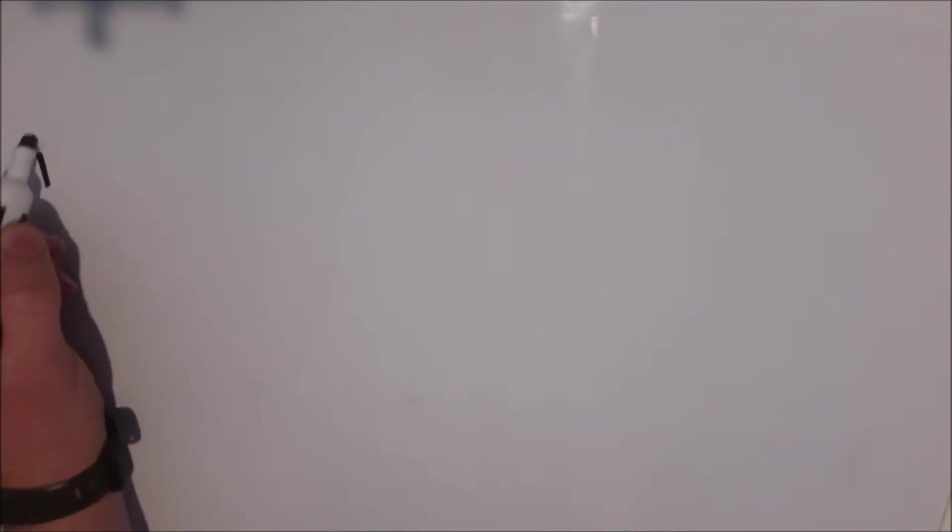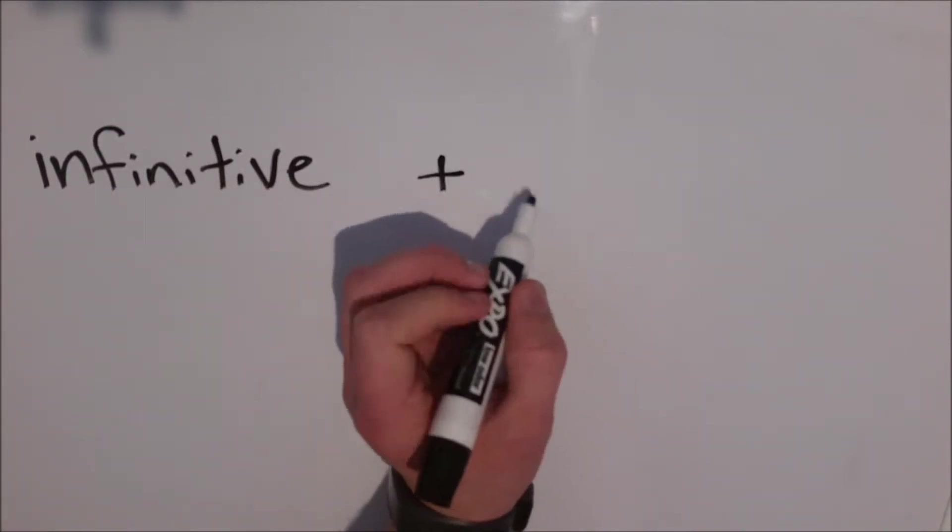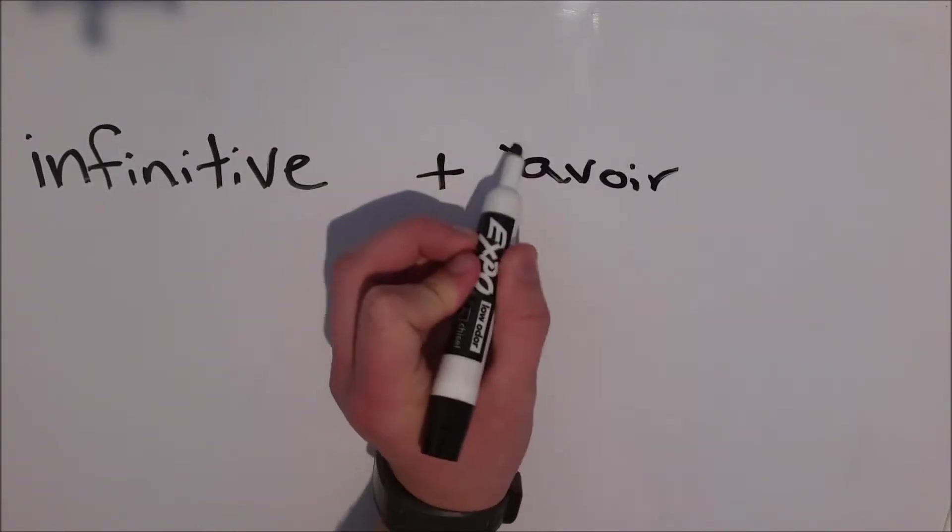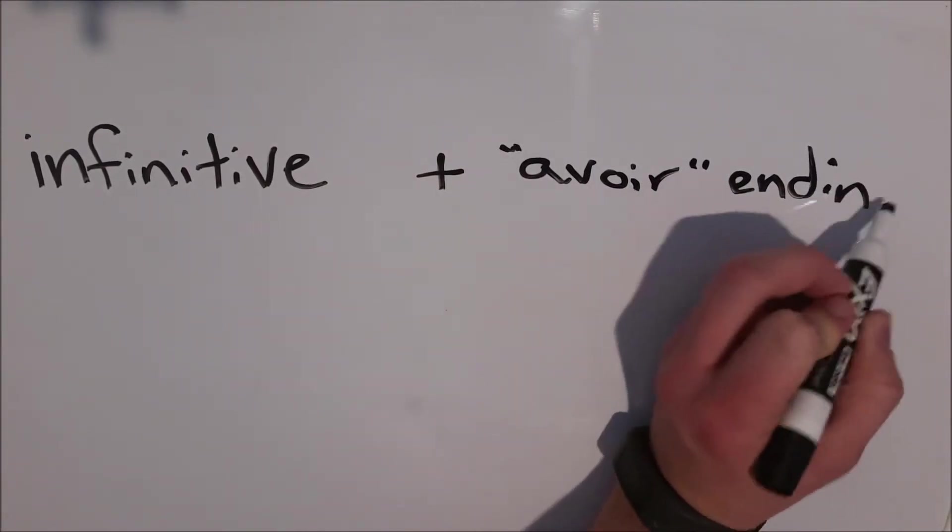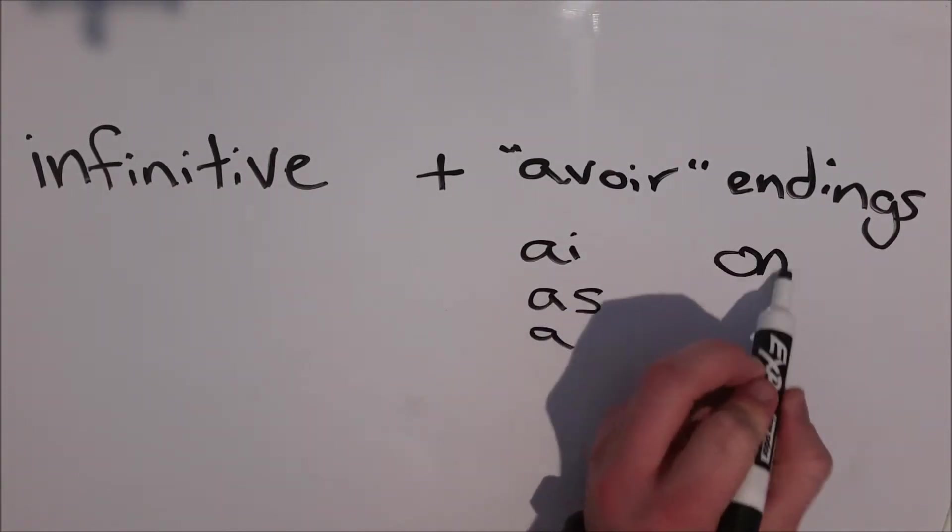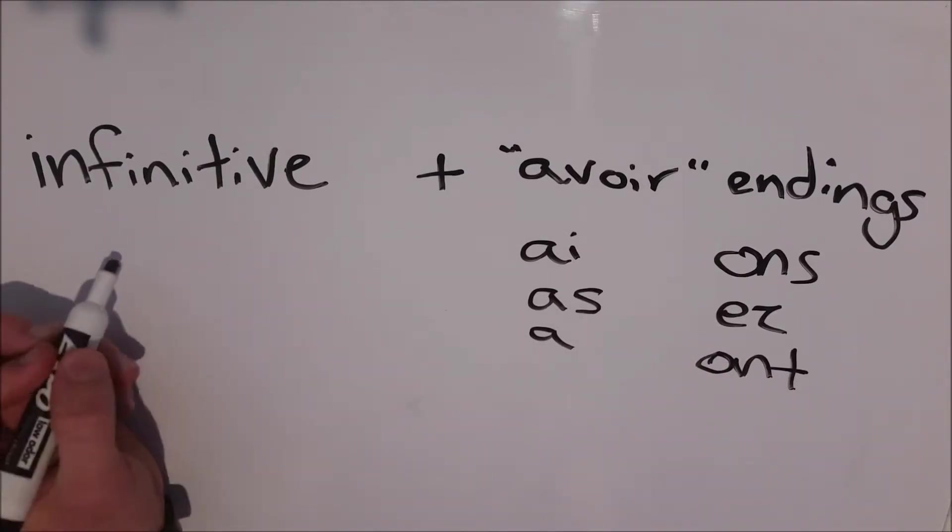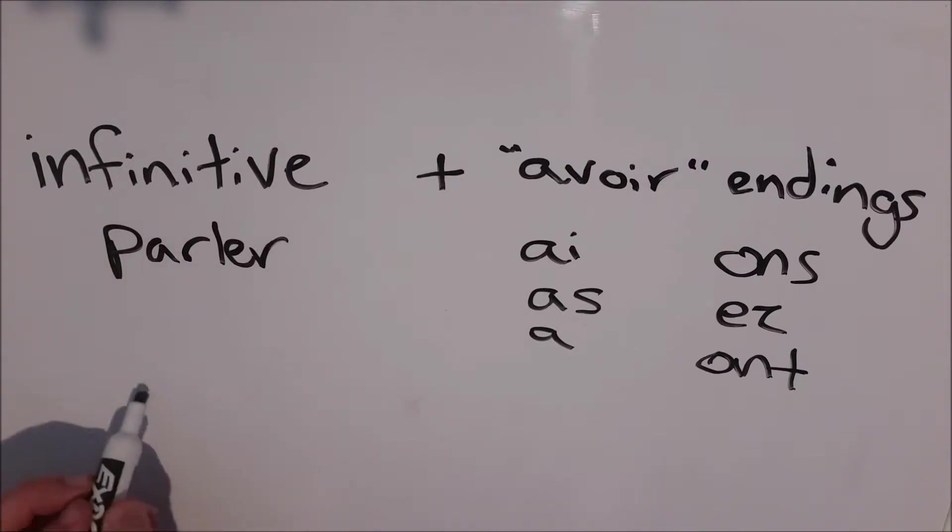So now let's look at how to form it. For regular verbs, you want to take the infinitive of the verb, and you want to add directly on the end what I call the avoir endings. Those endings are I, A, A, O and S, easy, O. So inside the boot, it's avoir, and outside the boot, it's the regular endings.